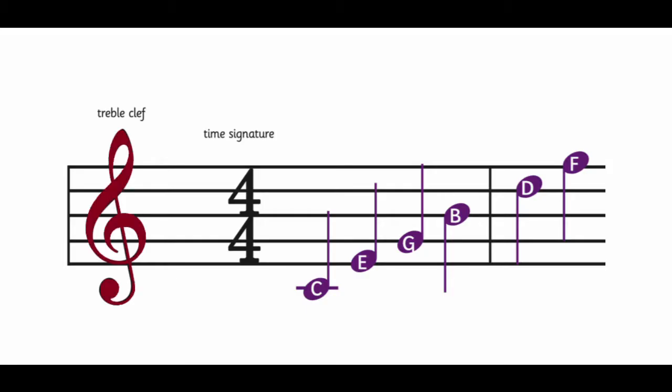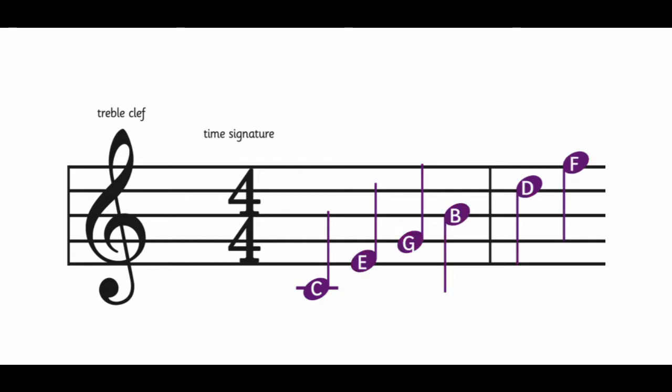Let's look at this staff with the treble clef. The names of the notes are A, B, C, D, E, F and G. You can figure out where they belong on the staff using a handy mnemonic: Every Good Boy Deserves Fruit. To remember which letters match up to the spaces, remember FACE.